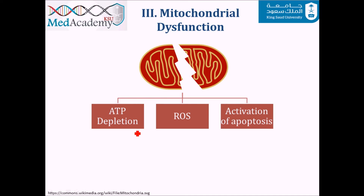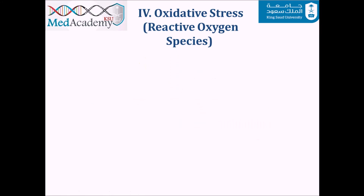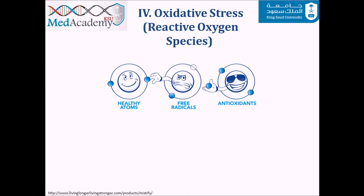The third principle is mitochondrial dysfunction. When the mitochondria are disturbed, ATP depletion occurs. Mitochondrial dysfunction also raises reactive oxygen species — covered in the next slide — and lastly triggers activation of apoptosis.